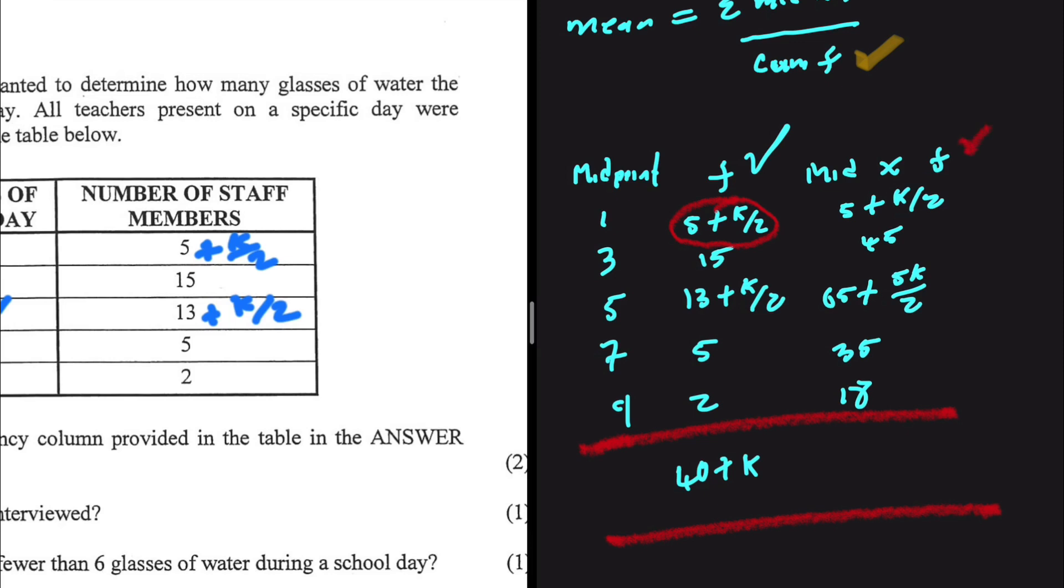And then midpoint multiplied by frequency, I need the total for that. I'm gonna add up the numbers first so I have 5 plus 45 plus 65 plus 35 plus 18 which is 168. I have 168 plus 1 divided by 2k plus 5 divided by 2k, that is plus 3k.